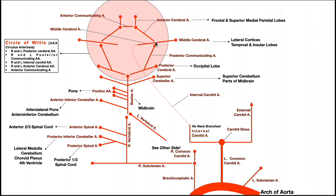Another branch comes off of the internal carotid artery: the anterior cerebral artery. The anterior cerebral arteries supply the frontal lobes of the cerebrum and the superior part of the medial parietal lobes. The two anterior cerebral arteries have an anastomosis between them called the anterior communicating artery.